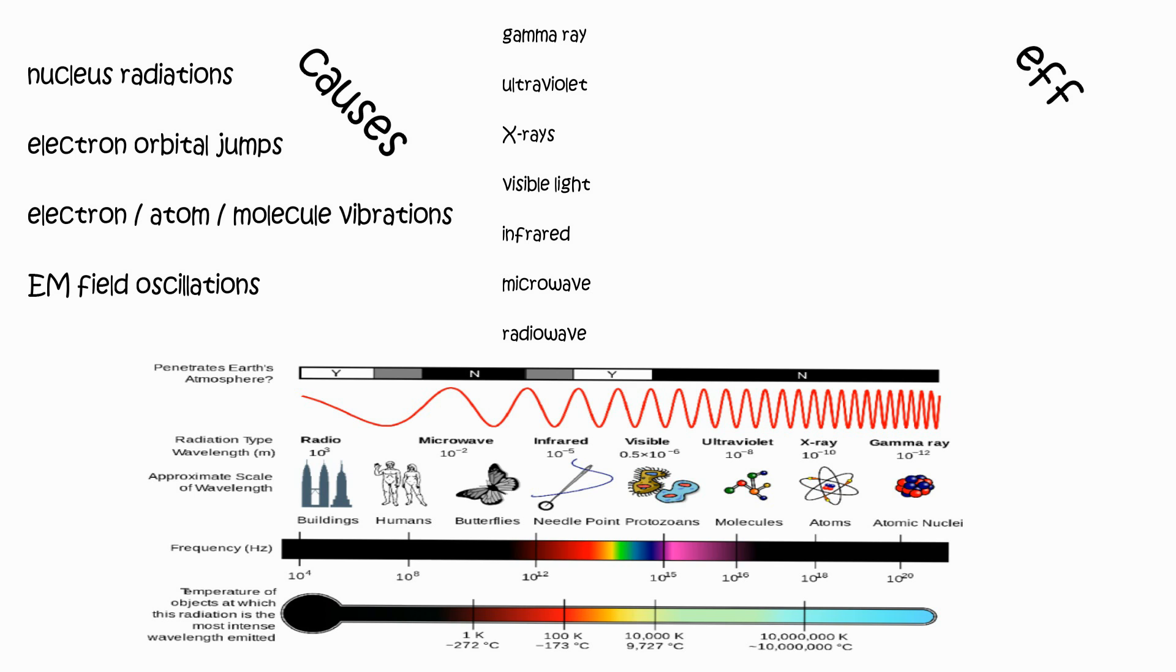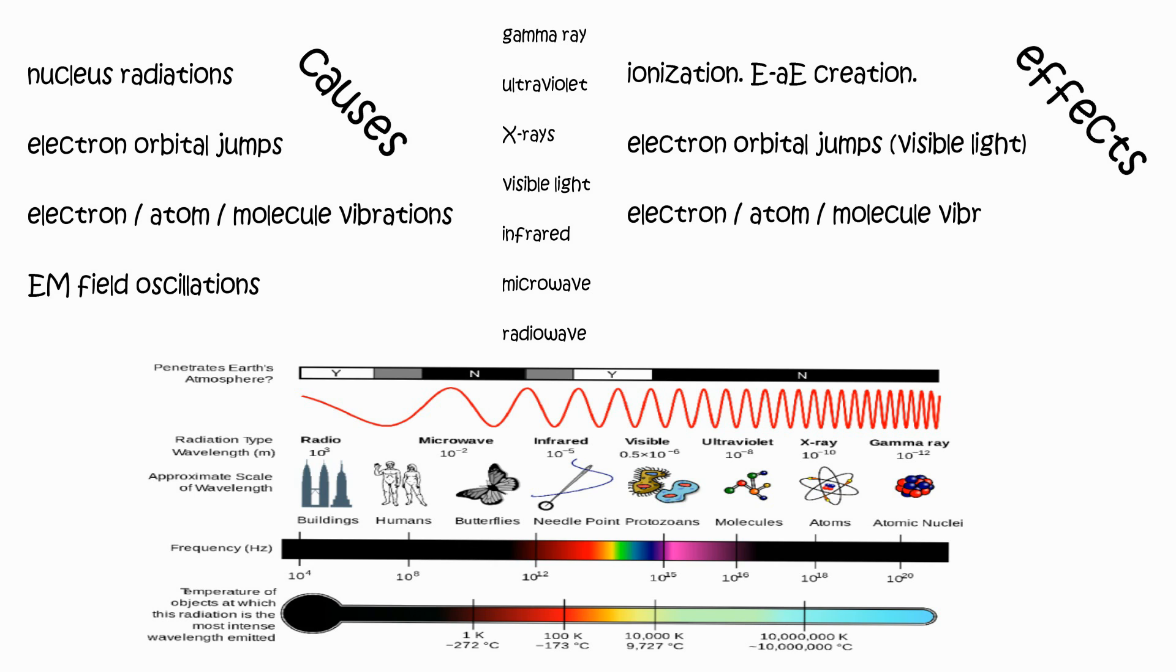Gamma rays and ultraviolet cause ionization of atoms, giving an electron so much energy that it jumps out of the atom. Ultraviolet to visible light causes electron orbital jumps. Infrared to microwave causes vibrations of electrons, atoms, and molecules, which is heat.